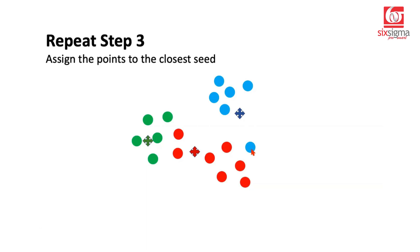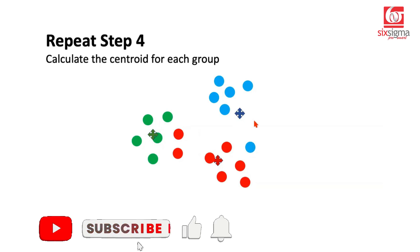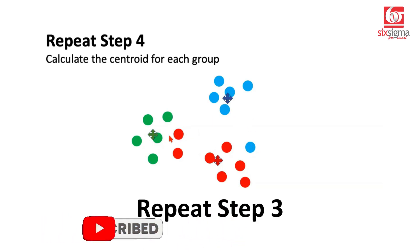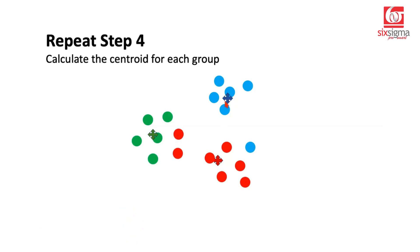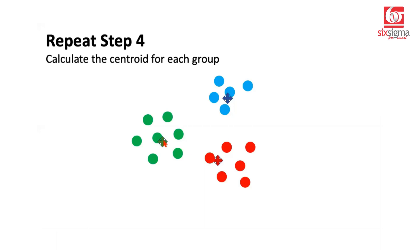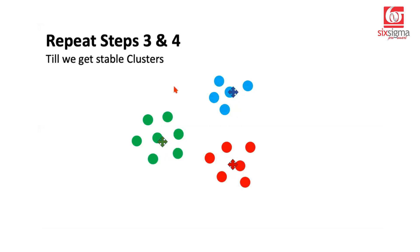Once again, we have to repeat step four — calculate the centroid again. Why again? Because we have added some new points, so the mean will be revisited. The green centroid shifts a little bit, the red centroid also shifts, and the blue centroid is drawn more towards the region of high density. Once again, we repeat step three to check whether points are closer to the green centroid compared to others. Some points go to the green centroid, and one point is now closer to the red centroid than to any other. So we give it appropriate membership and recalculate the centroid. We keep repeating these steps until we get stable clusters.